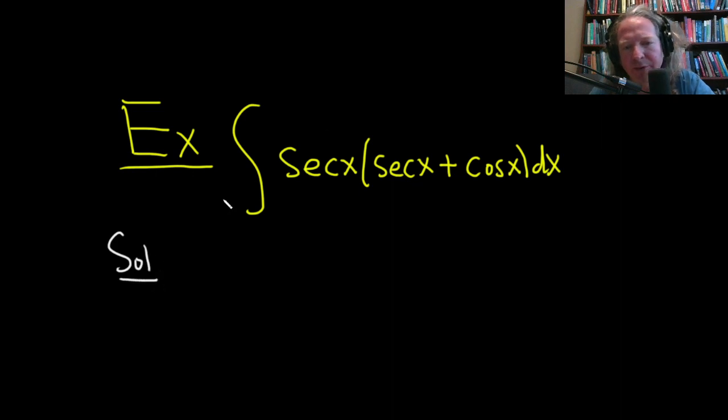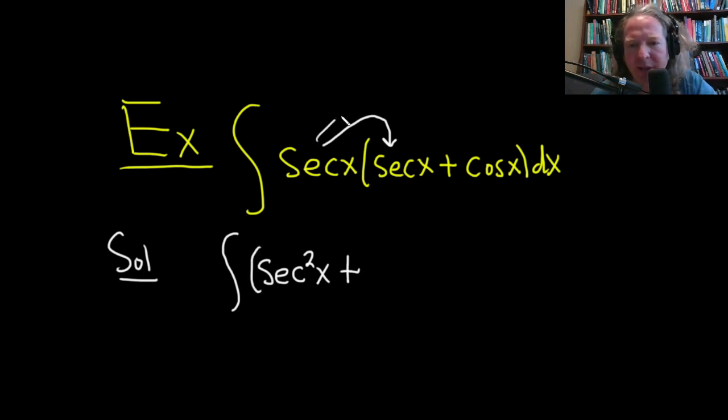So to do this, a good first step might be to just distribute the secant and see what happens. So we have our integral sign here, and then secant times secant, that's going to be secant squared of x, and then plus secant times cosine. And then we have our dx here.